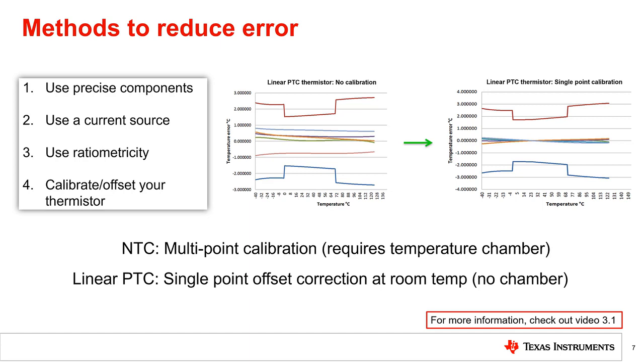However, this is only the case depending on the type of thermistor chosen and temperature range of interest. For example, NTC thermistors have a large variance in resistance tolerance and a large change in their temperature coefficient of resistance across temperature. Because of these changing characteristics and large tolerances, NTC thermistors often need up to three points of calibration across the full temperature range in order to achieve very high levels of accuracy.